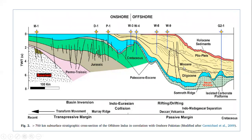Then we have Paleocene and Miocene targets. We have some isolated carbonate platforms and some Indian and Eurasian plate interaction. This area is a transpressive margin area related to basin inversion. The first part involved fault activation, which gave us transform movements. This basin basically has two phases in its geological history.